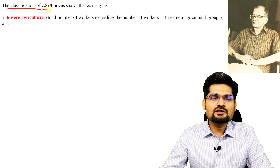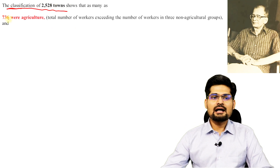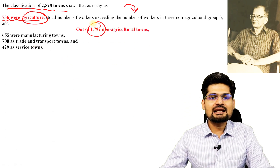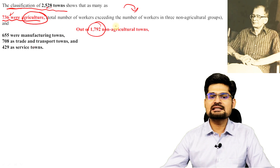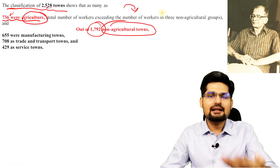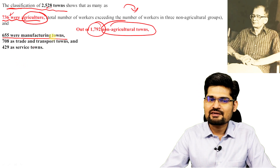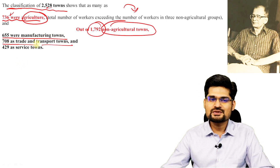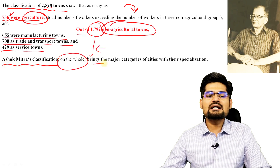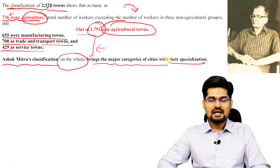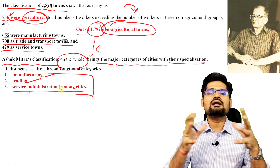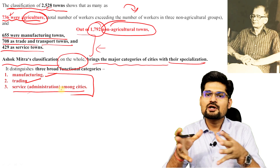The classification of 2,528 towns was done by Ashok Mitra, of which 736 were agricultural. The remaining 1,792 were non-agricultural towns: 655 were manufacturing towns, 708 were trade and transport towns, and 429 were service towns. Ashok Mitra's classification thus brings the major categories of cities with their specialization into three broad groups: manufacturing towns, trading towns, and service towns.